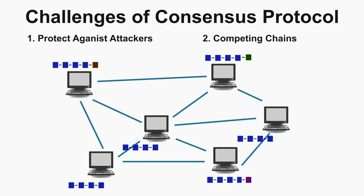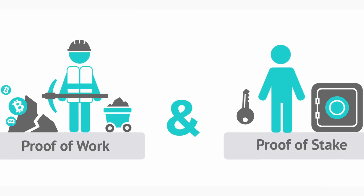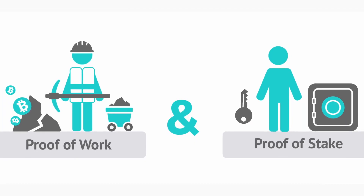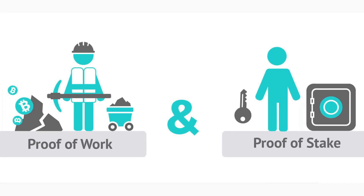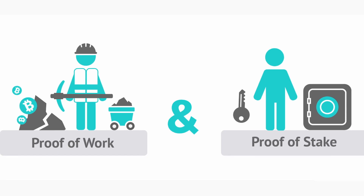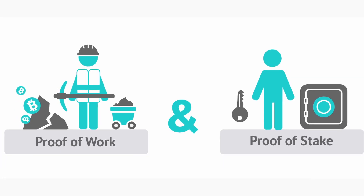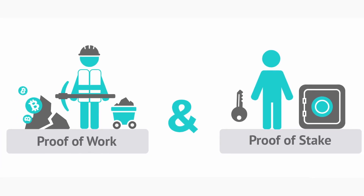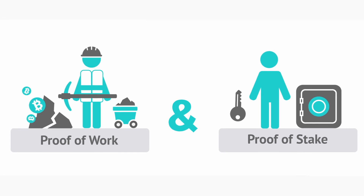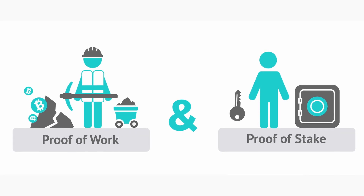So these are the two challenges: first, to protect against attackers, and second, the competing chain. We will discuss the solution to the first challenge in this video and the second challenge in the next video. There are different types of consensus protocols, and among them the most popular are proof of work and proof of stake.